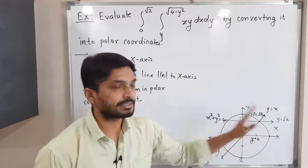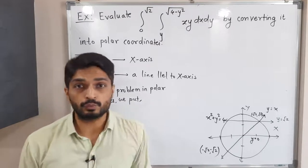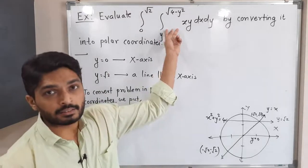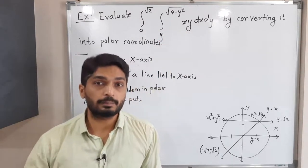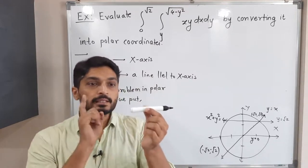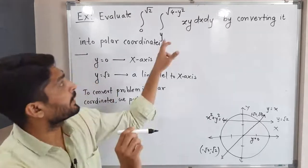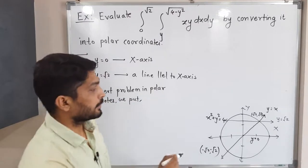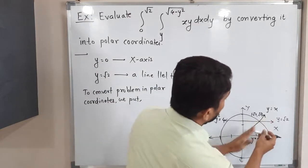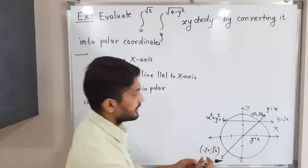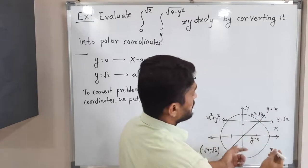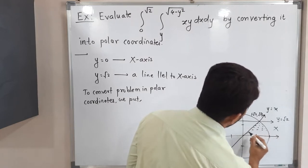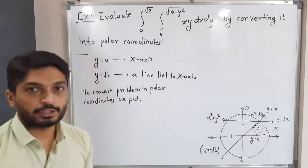So the region is bounded between y = 0 and y = √2, by part of the circle and by the line x = y. Looking at the inner integral with respect to x, the strip is parallel to the x-axis, bounded below by the line x = y and bounded above by part of the circle. This region satisfies all conditions and is the region of integration.